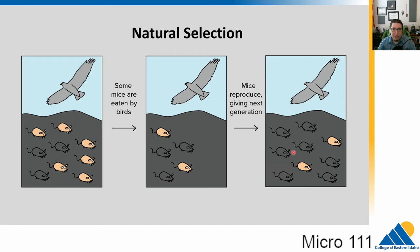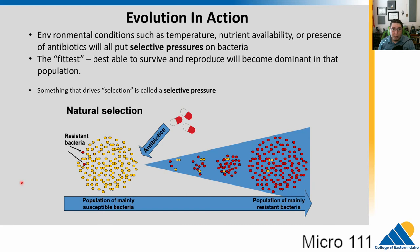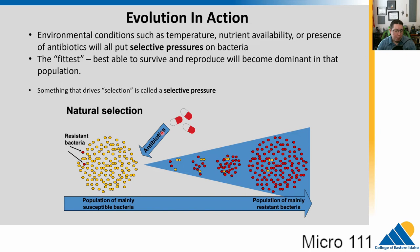Luckily, microbes reproduce very quickly, so we can witness evolution happening in a rapid manner. In the microbes' environment, conditions like temperature, nutrient availability, or the presence of antibiotics are all selective pressures — something that might drive selection on bacteria. The fittest microbes are the ones best able to survive and reproduce and will become dominant in the population. We're going to talk about an example where our selective pressure is the application of antibiotics.